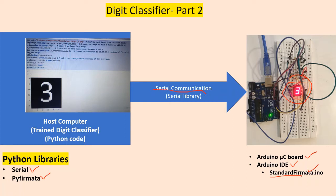I will also demonstrate this communication. As you can see, the trained model is already available. We predict a digit value using the trained model, then send the command from Python through serial communication to the Arduino microcontroller. The seven-segment display will then display that digit — for example, three is sent and three is displayed. A common cathode seven-segment display is used here.